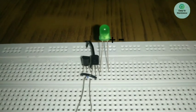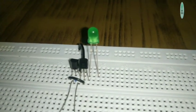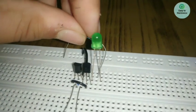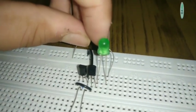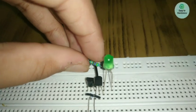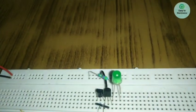And connect its negative terminal to the negative lane via a 560 ohm resistor like this. And our circuit is ready.